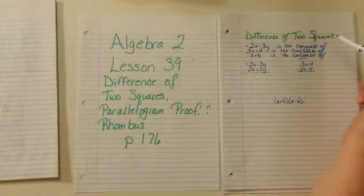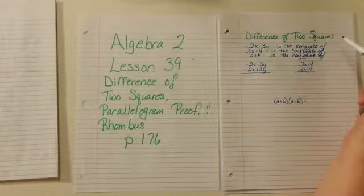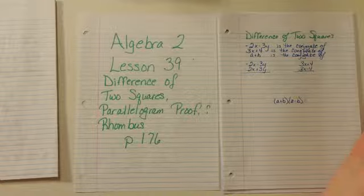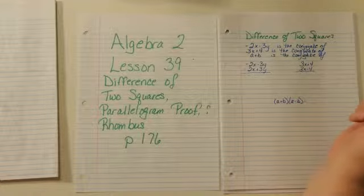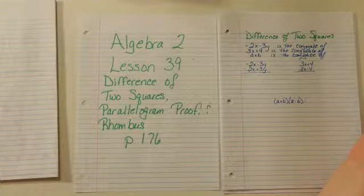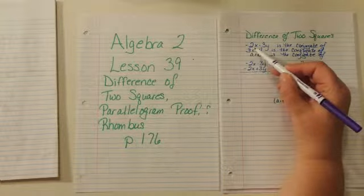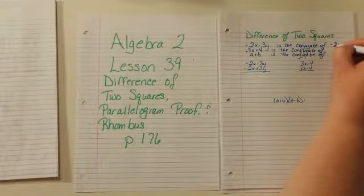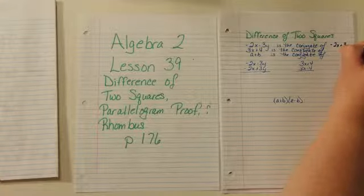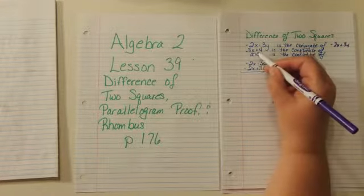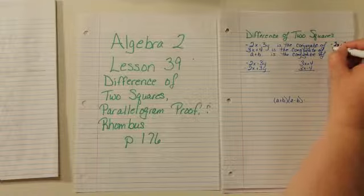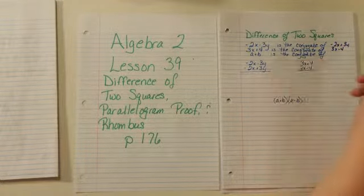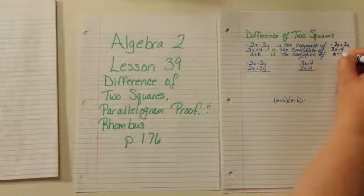First, the difference of two squares. We've talked about conjugates before. Remember, the conjugate of a two-term algebraic sum has identical terms, but the sign of one term is opposite. So negative 2x minus 3y is the conjugate of negative 2x plus 3y. 3x plus 4 is the conjugate of 3x minus 4. a plus b is the conjugate of a minus b.